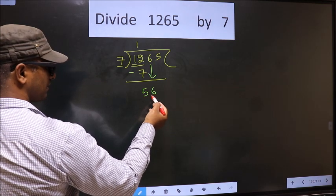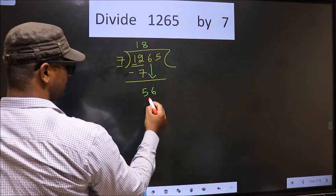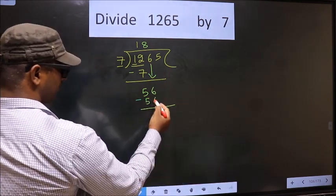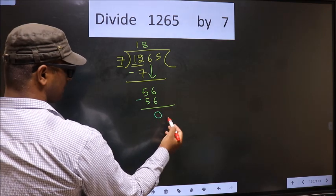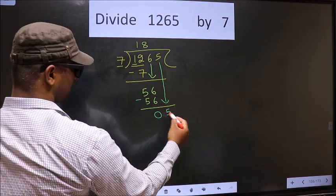That is 6 down. Now 56. When do we get 56 in the 7 table? 7 times 8 is 56. Now you subtract. 56 minus 56 is 0. Now you will bring down the beside number. That is 5 down.